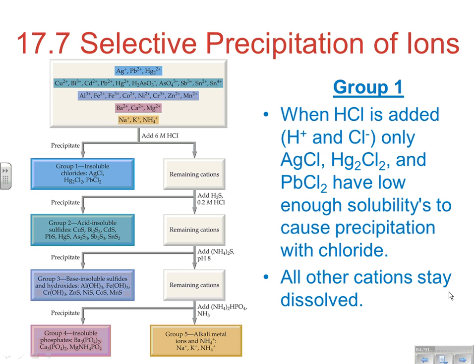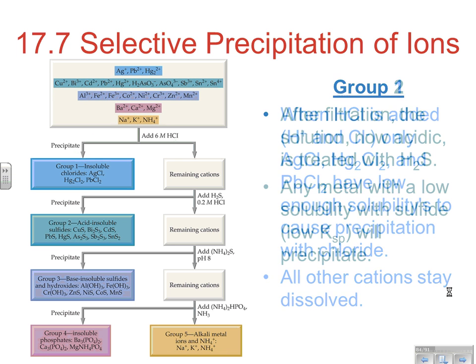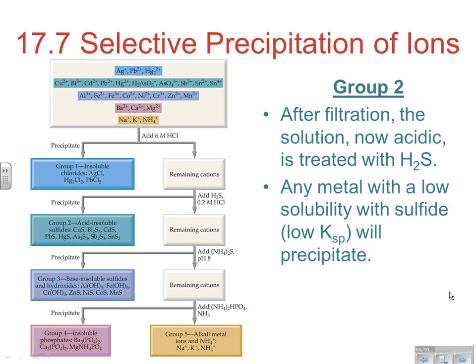After we've added the acid, we now have an acidic solution. Anything else inside there is still going to stay in solution — they're going to remain dissolved and stay as cations, which is what our flowchart shows. So the group 1 metals precipitate out, and we can separate them with filtration. The remainder would stay in solution, still dissolved.